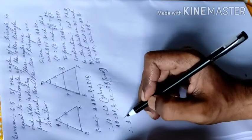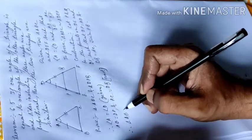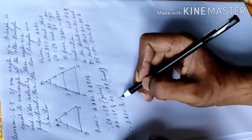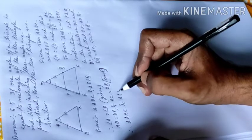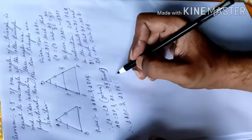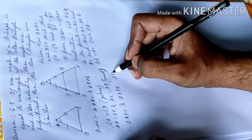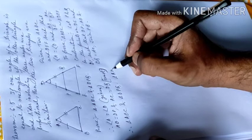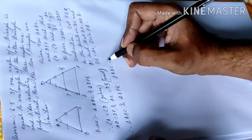therefore triangle ABC and triangle DPQ are congruent. These two triangles are congruent.